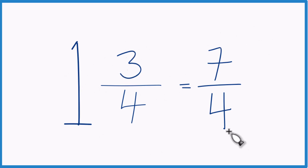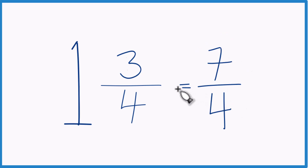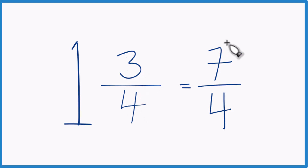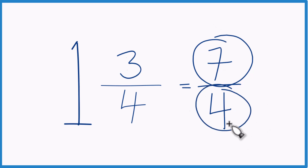These are equivalent — they have the same value, just represented differently. And it's improper because 7 is larger than 4. So let's do that again: 1 times 4 is 4, plus 3 is 7 — the numerator. We bring the denominator across: 4. So we get 7 fourths.